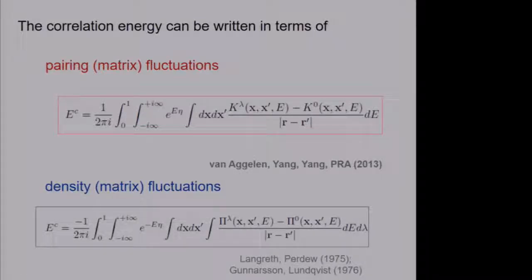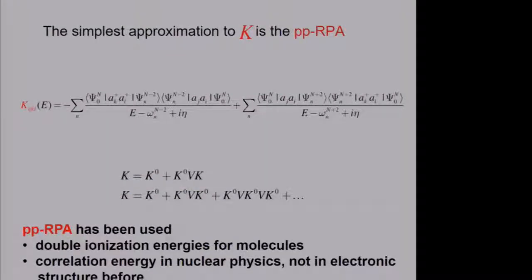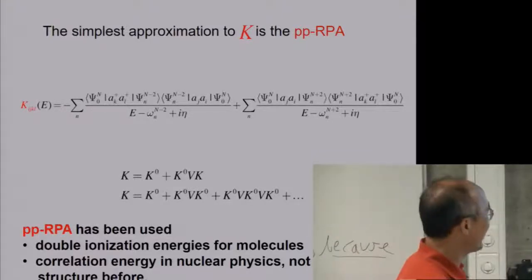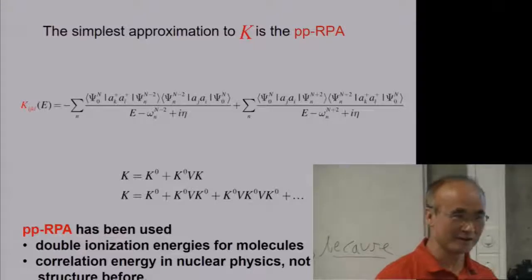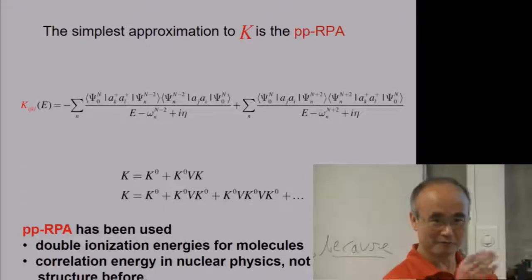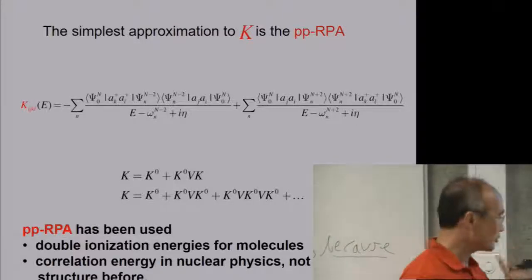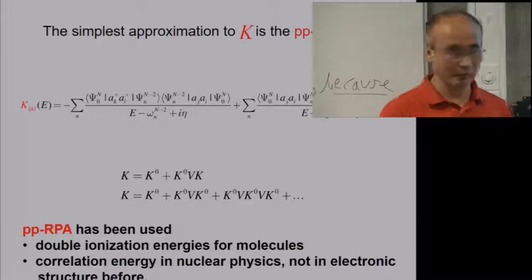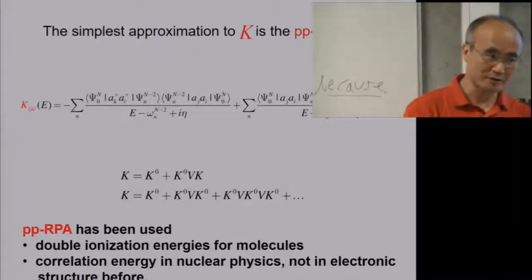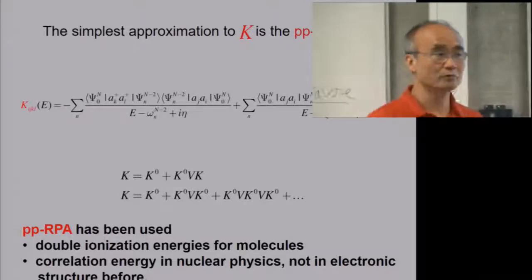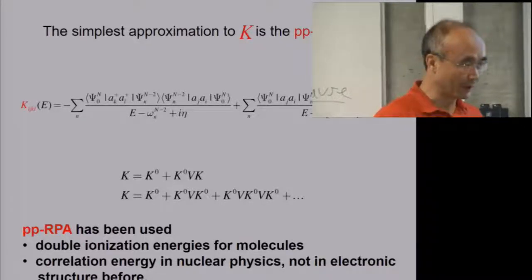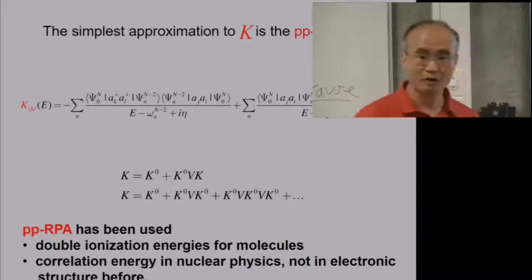These are all exact expressions. When you make the approximation, a simple approximation is again a Random Phase Approximation — now called PP-RPA, the particle-particle random phase approximation. The mathematics is essentially the same; you can almost copy from one to the other. Importantly, PP-RPA is not our invention. The connection of the pairing matrix to electron correlation energy is what we derived — that is new. But PP-RPA as an approximation already existed in the literature, used for double ionization energy of molecules and correlation energy in nuclear matter, but never for electronic structure.